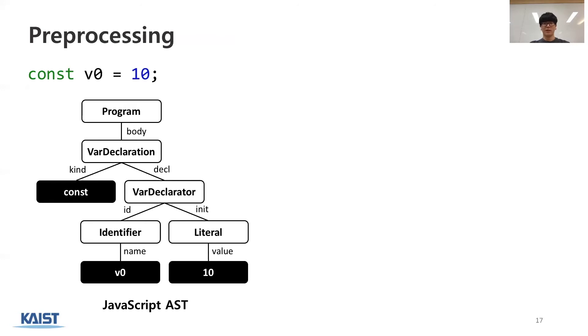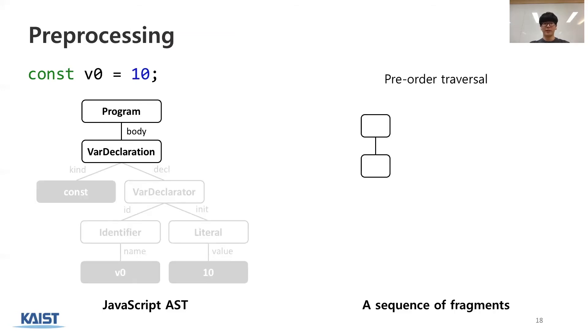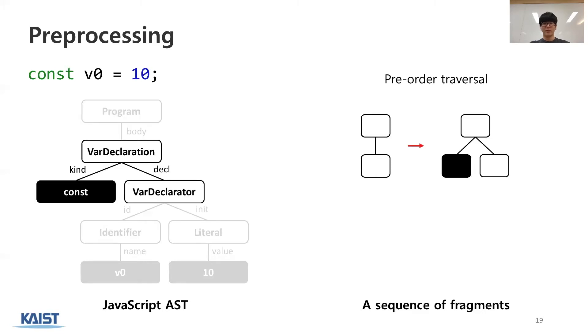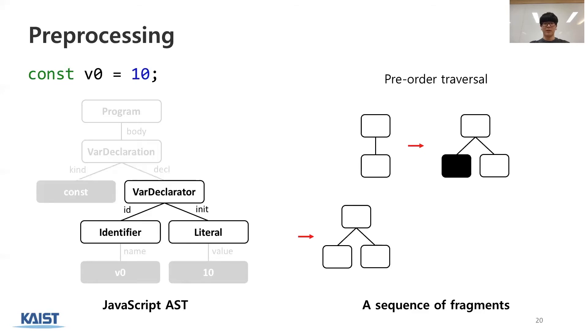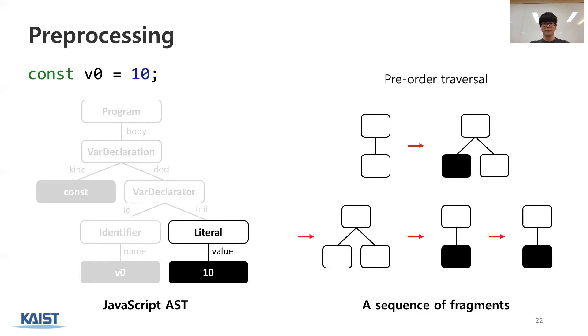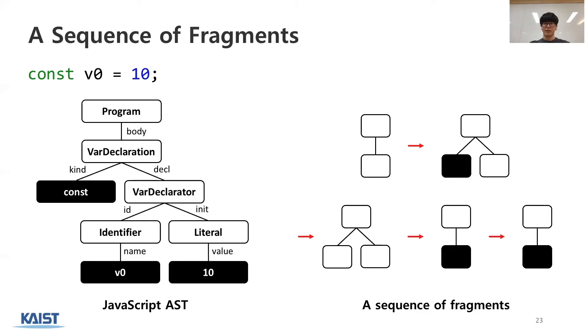So, let's first take a look at the pre-processing step. We have JS code here, and the corresponding AST. From this AST, Montage extracts a fragment, which is a sub-tree of depth 1. Particularly, it extracts fragments in the pre-order manner. So, the next fragment is this one, then this one, this one, and this one. As a result, the AST on the left side is represented with the sequence of fragments on the right side.